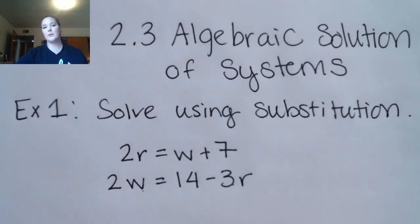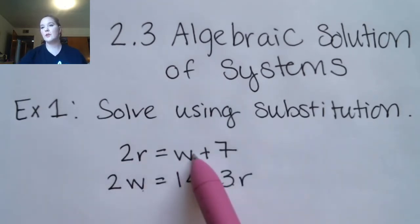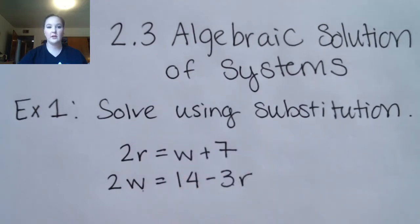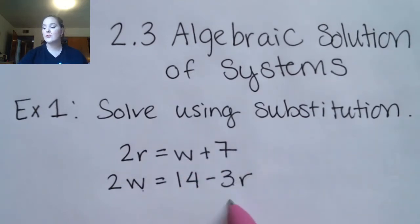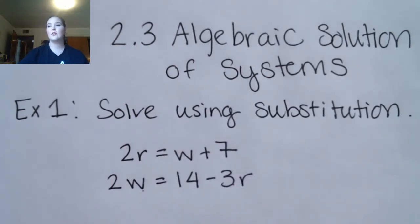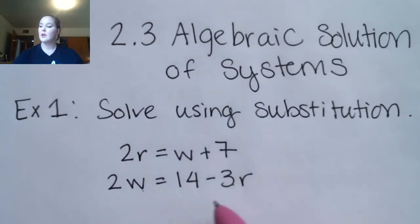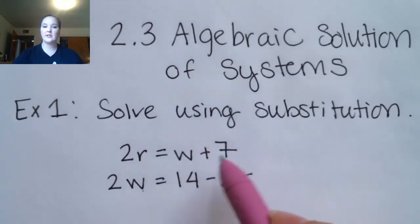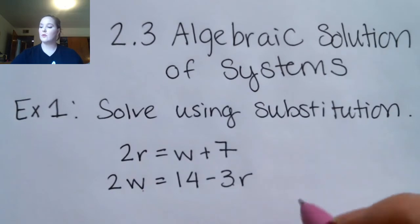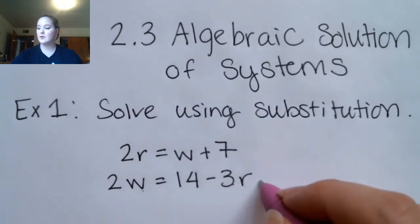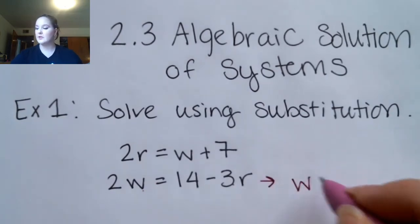Now we're going to try to minimize the amount of work that we're doing here. If we divide by 2, we'll get a fraction here and a fraction here. We'd like to avoid that, but we're still going to get a fraction if we divide here. Here we'll only get one fraction, as opposed to two, so I'm just going to divide both things by 2.